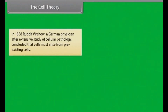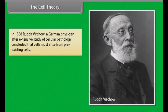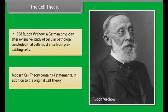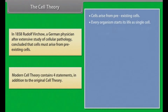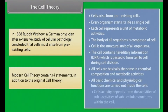In 1858, Rudolf Virchow, a German physician, after extensive study of cellular pathology, concluded that cells must arise from pre-existing cells. Modern cell theory contains four statements in addition to the original cell theory.